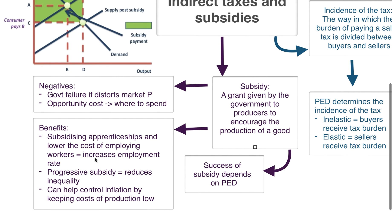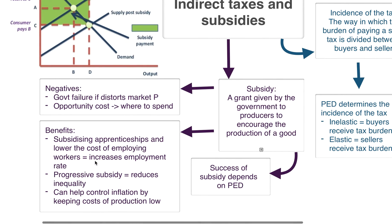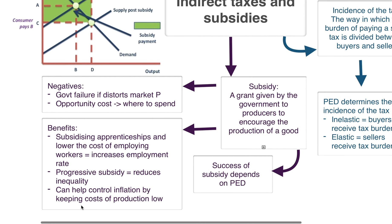Subsidies can also help control inflation because they keep the cost of production low. So if the government's aim is to lower inflation, subsidies can make sure the price level does not increase too much. Also, a progressive subsidy reduces inequality — progressive meaning the higher the cost, the higher the amount given — so for poorer people in society it benefits them a lot more, whereas the upper class won't receive as much from the subsidy.